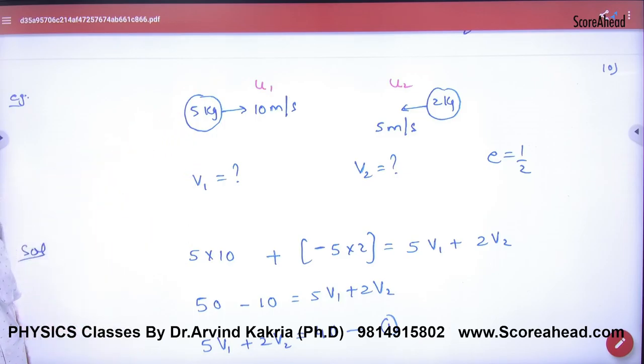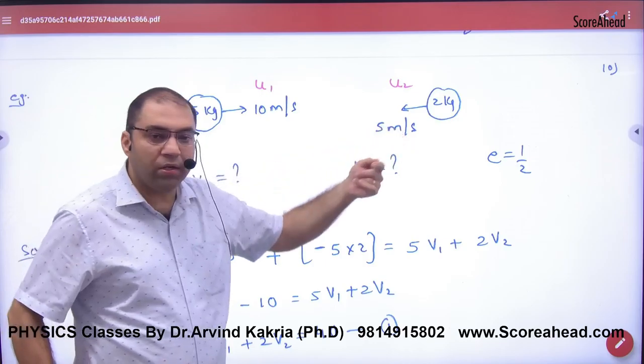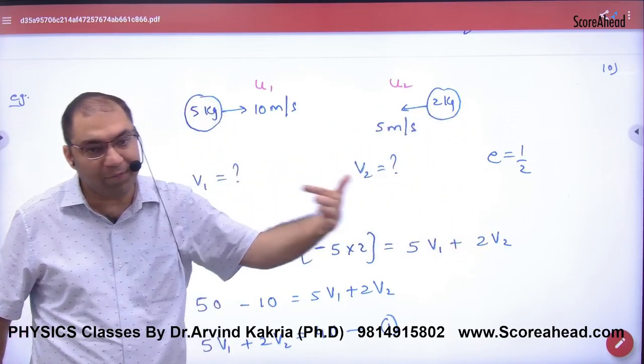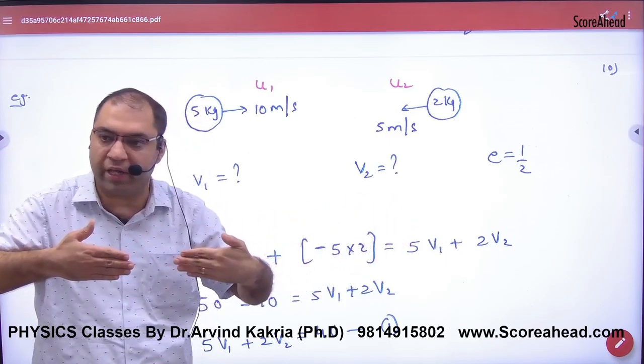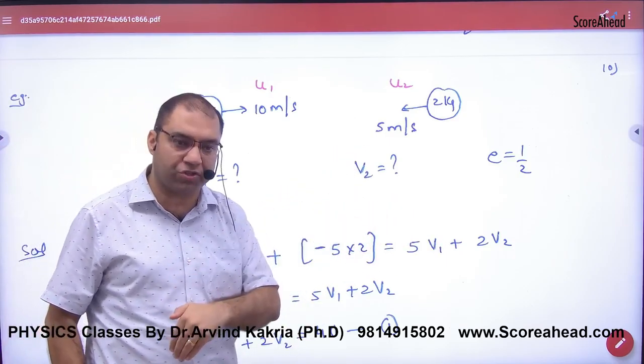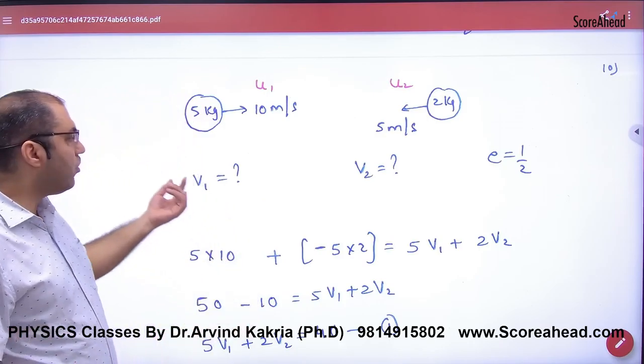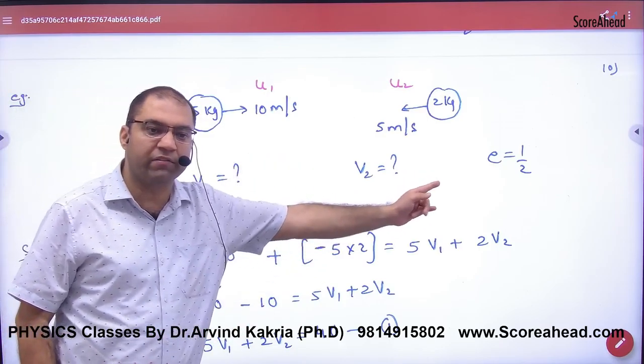This time you have a ball of 5 kg given, moving with 10, U1 given. The second ball is moving right to left. So velocity, we have always taken right. What happened? Head-on collision. And velocity is 5 in opposite direction, U2 given. What do you want to find? V1, V2. And E is half.